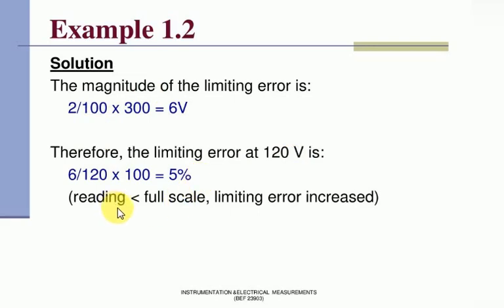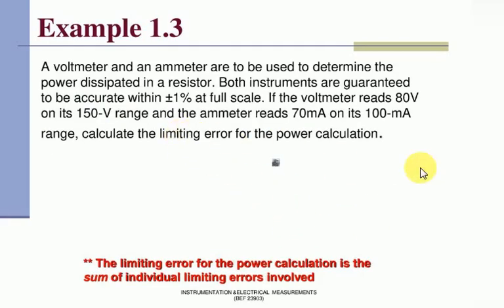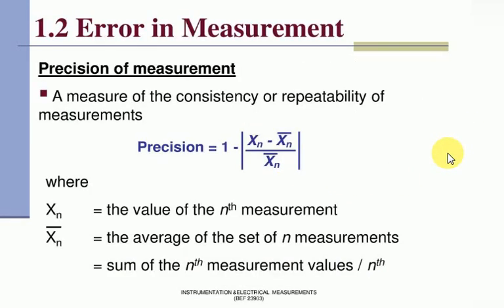Precision of measurement. What is precision? A measure of the consistency or repeatability of measurements. Precision equals 1 minus absolute value of xn minus x̄n divided by x̄n, where xn is the value of nth measurement and x̄ means the average of the set of n measurements.